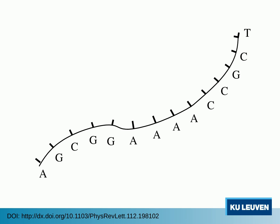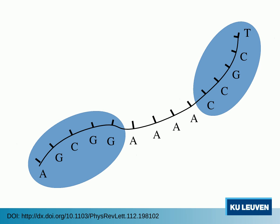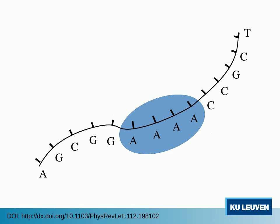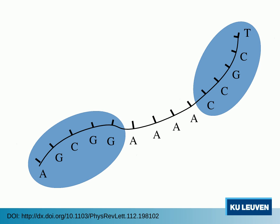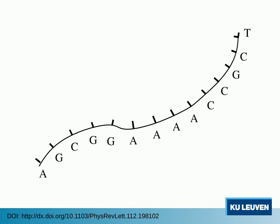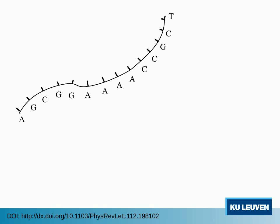Consider a single-stranded DNA sequence which contains two self-complementary end parts, separated by a central short non-complementary sequence. At sufficiently low temperatures, the self-complementary parts will bind together.